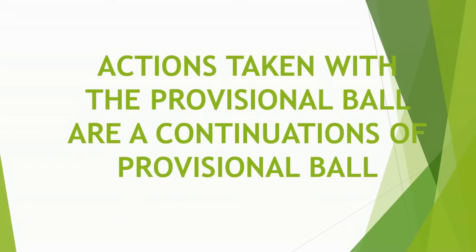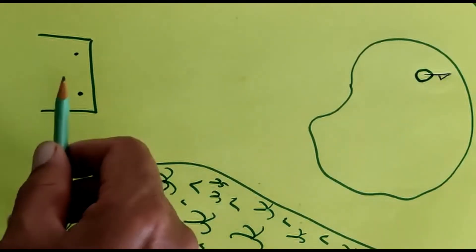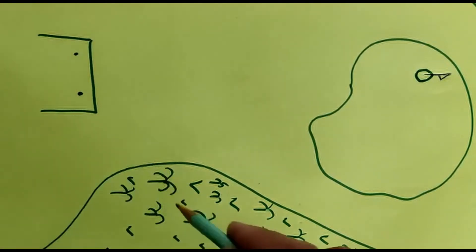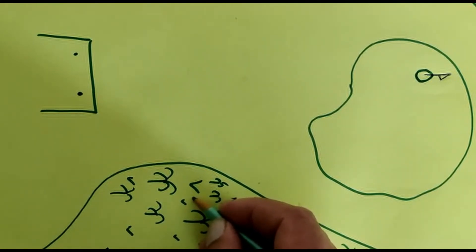Actions taken with the provisional ball are a continuation of provisional ball. Let us say a player hits a shot from the tee area which goes approximately 50 yards from the green, maybe in this general area. Fearing that he may not find his ball,